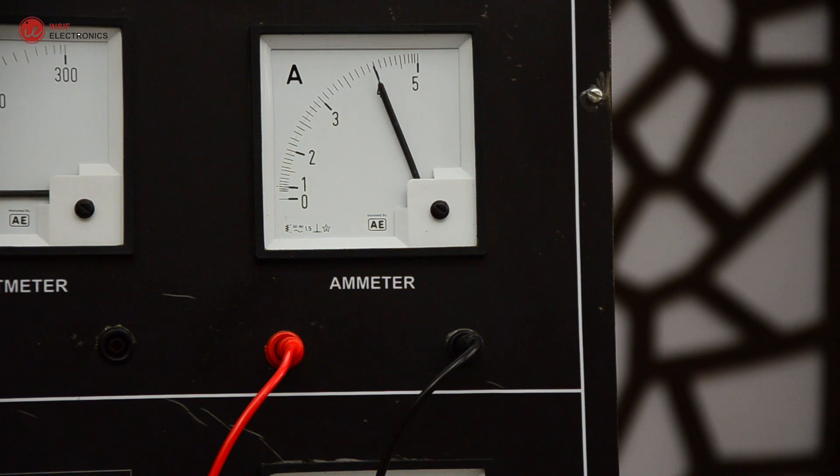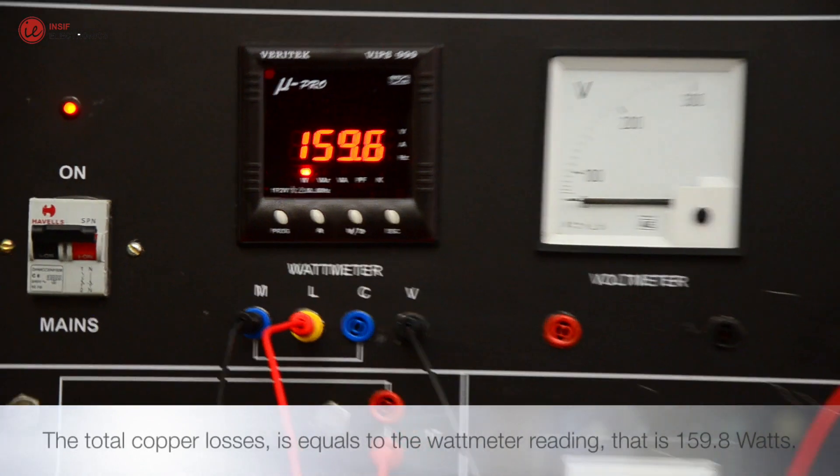The total copper losses is equals to the watt meter reading, that is 159.8 Watts.